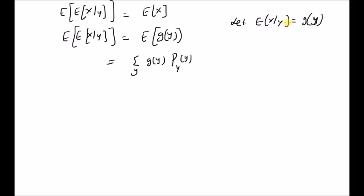Now, by using this value — by basically inserting the definition of this function — we have, by using the definition, the summation over y of the conditional expectation of X given Y, times the marginal function p_Y(y). That is, the summation of this product.